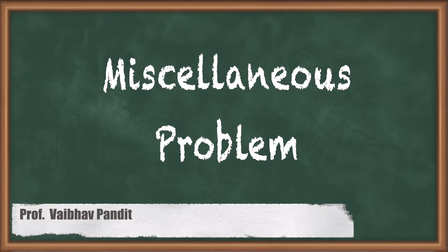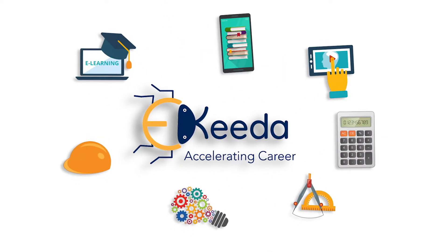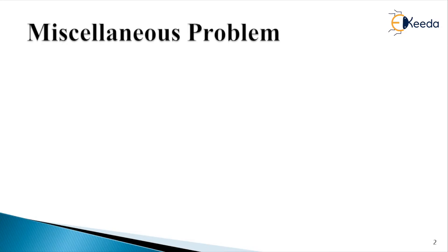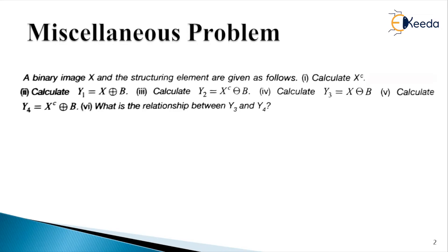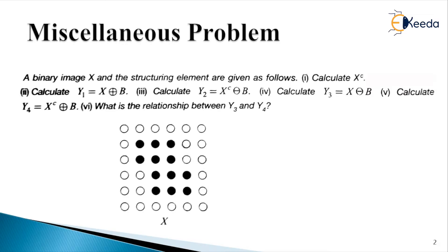Based on our understanding of the fundamental Morphological Image Processing operations, we have a problem to practice, and after that we can start with a new chapter. Let us begin with the miscellaneous problem. The problem statement is given: a binary image denoted by capital X and the structuring element are provided.